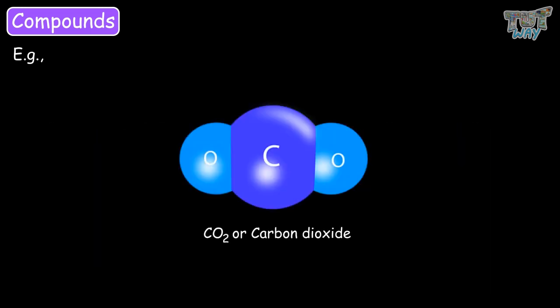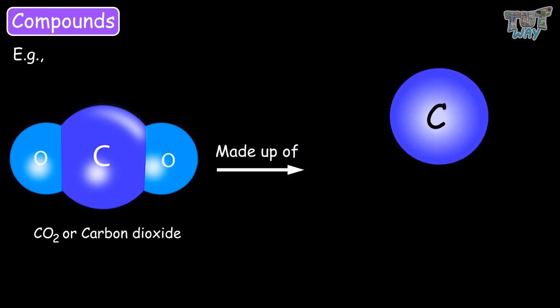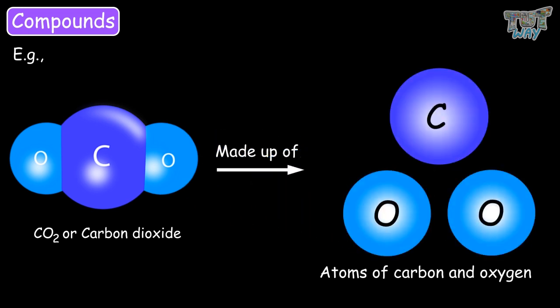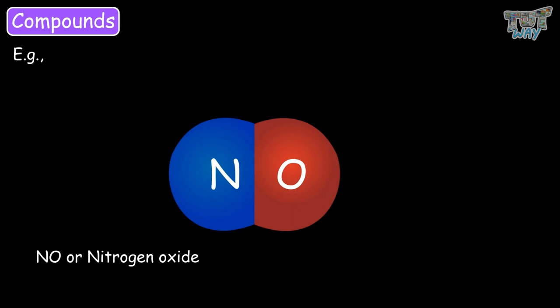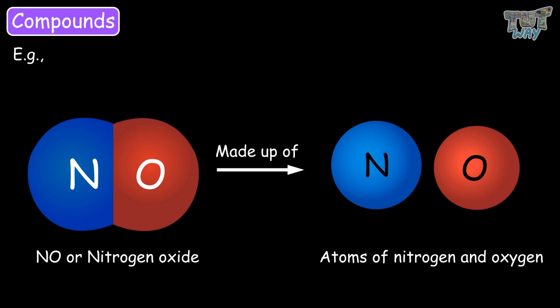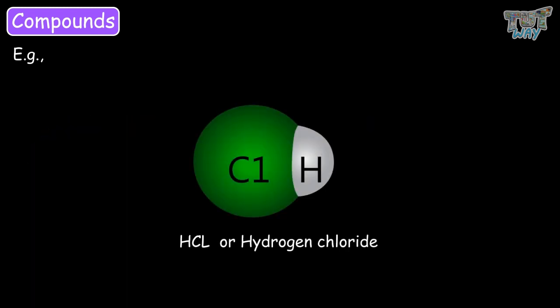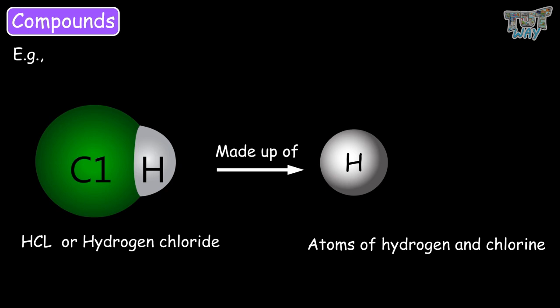Carbon dioxide, or CO2, is a gas that is a compound because it has two types of atoms — atoms of carbon and atoms of oxygen — and each molecule of carbon dioxide has one atom of carbon and two atoms of oxygen. Nitrogen oxide is a gas that is a compound with two types of atoms: atoms of nitrogen and atoms of oxygen. Each molecule of nitrogen oxide has one atom of nitrogen and one atom of oxygen. Hydrogen chloride, or HCl — each molecule of HCl has one atom of hydrogen and one atom of chlorine.